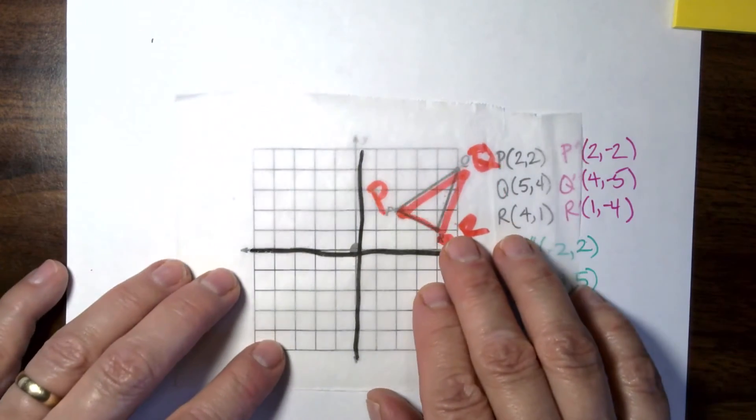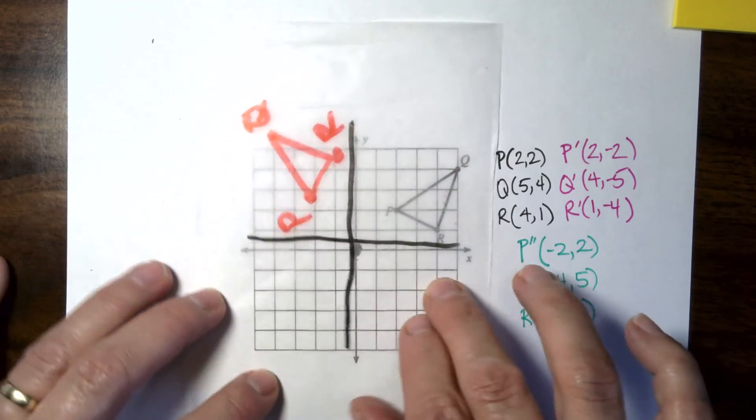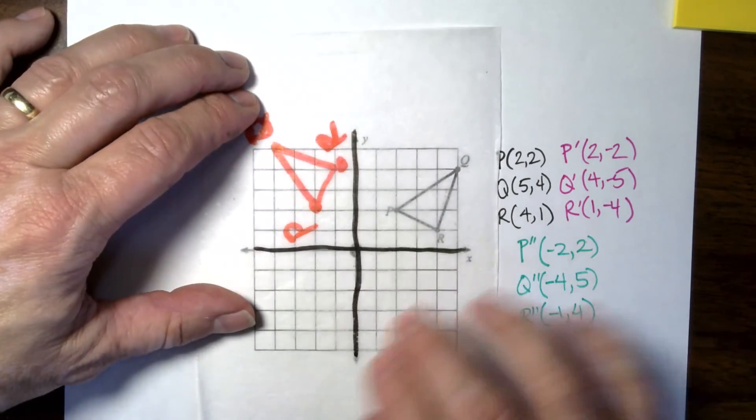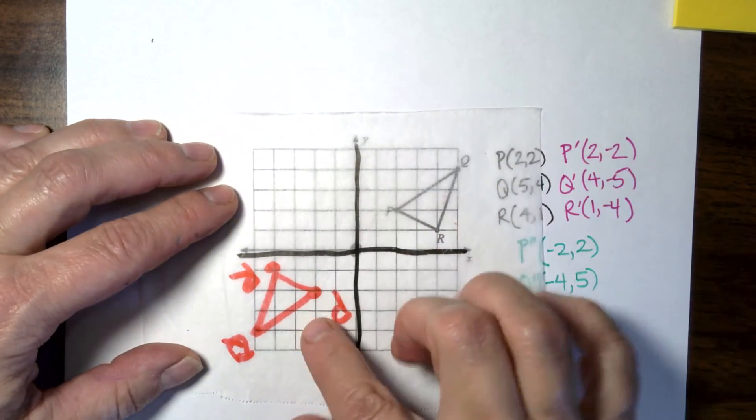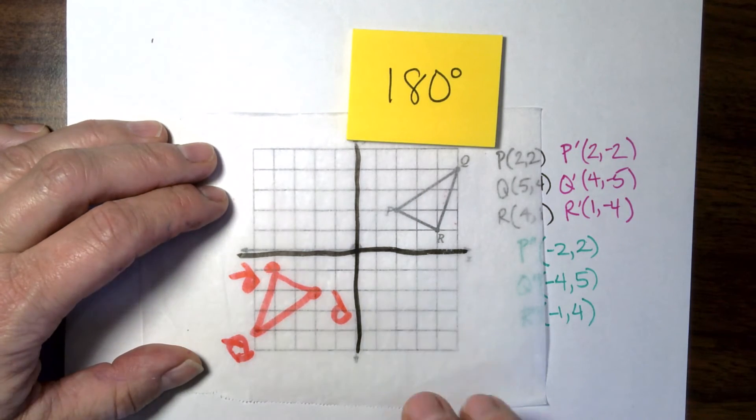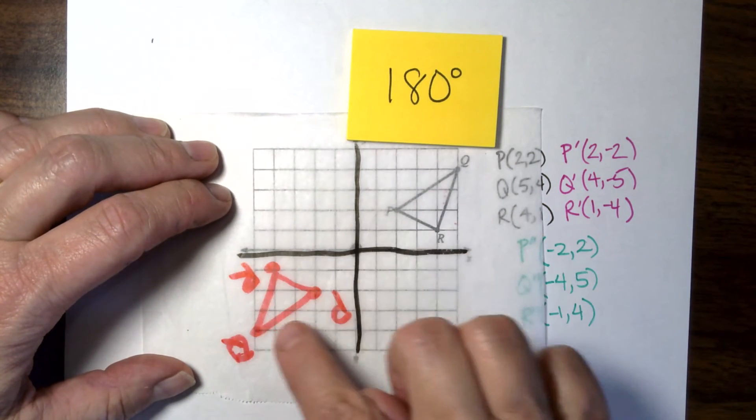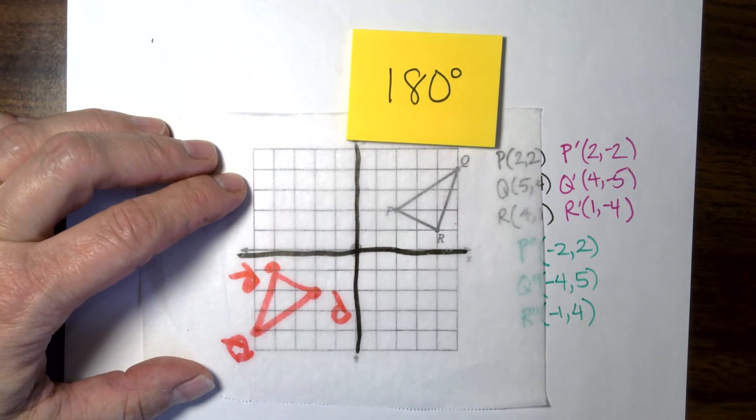Now if I do it at the other direction and go counterclockwise, you'd go click over to quadrant two first, and then you'd go click and you'd still end up in quadrant three. And that's why 180, it doesn't matter. It doesn't matter if you go counterclockwise or clockwise. It doesn't matter. You'll still line up here. So let's write down the new points.